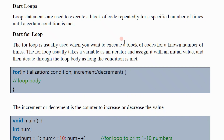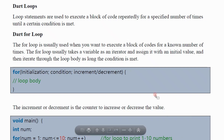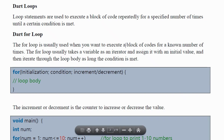A for loop helps you achieve this task in a much simpler way with just a few lines of code, where you give your condition and the number of times you want to repeat. The for loop is usually used when you want to execute a block of code for a known number of times. It takes a variable as an iterator and assigns it an initial value. The syntax is: the 'for' keyword, then inside round brackets you give your initialization, condition, then increment or decrement.